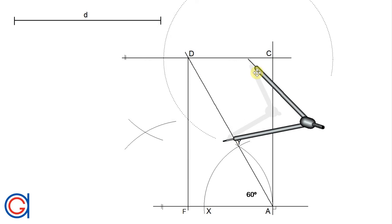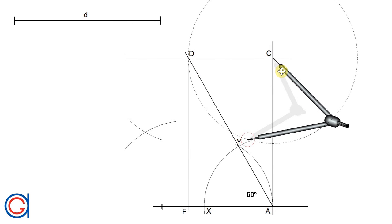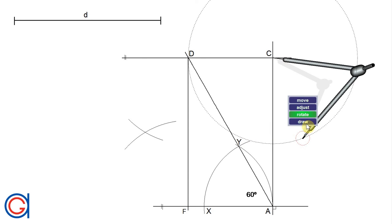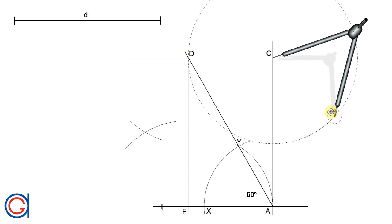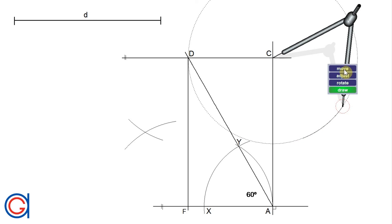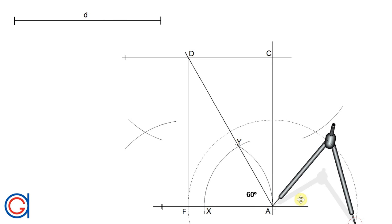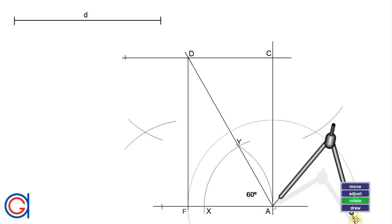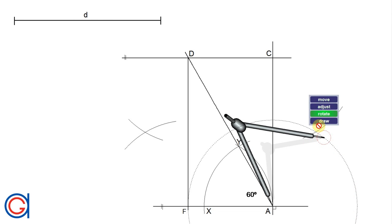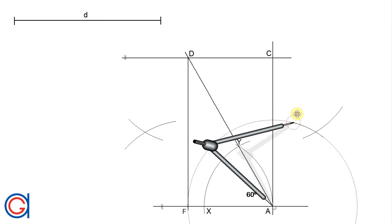Now to get the last vertex, setting the compass on vertex C and with the same radius, we scribe an arc. Now with the same radius setting the compass on vertex A, we scribe another arc until it cuts our previously drawn arc, and we get our final vertex B of the hexagon.